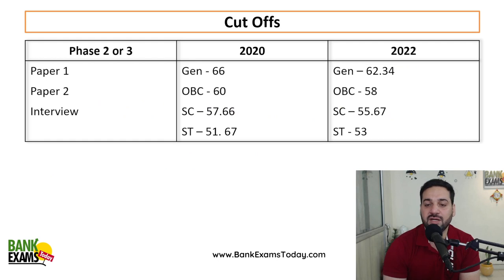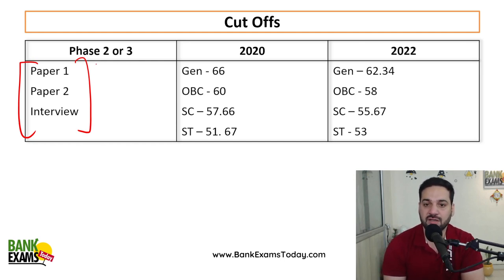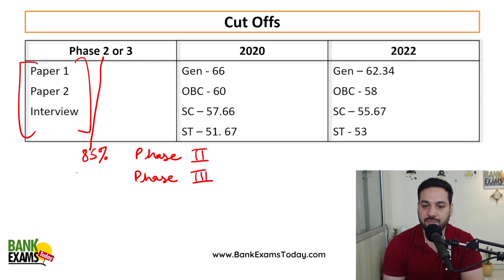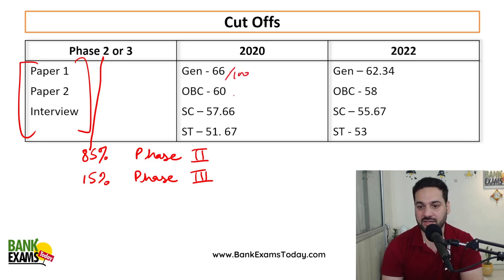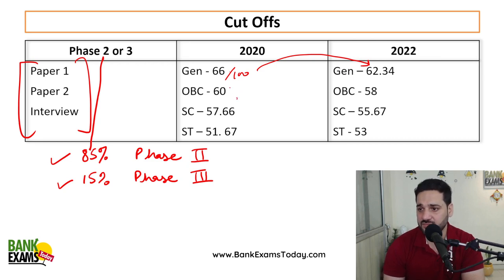We don't have exact cutoffs for phase two and phase three individually, but we have the aggregate cutoff. Whatever scores you have obtained will be normalized — 85% weightage to phase two and 15% to phase three. Cutoffs have been reduced from 66 to 62.34 for the general category, so cutoffs have been reducing in the last one or two years.